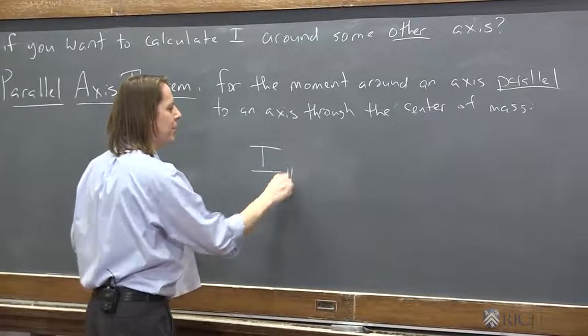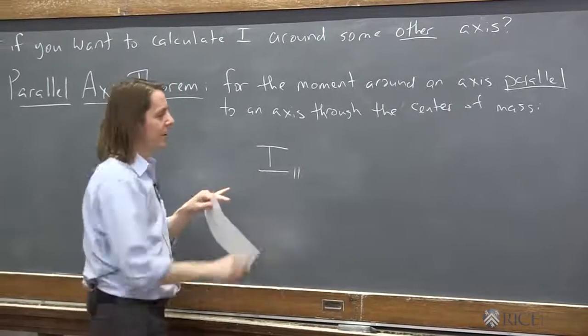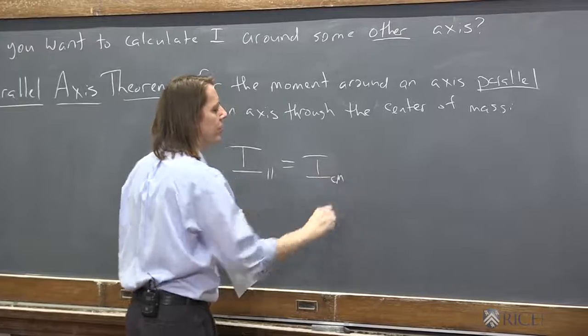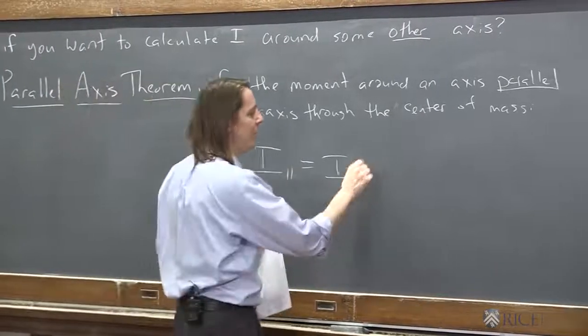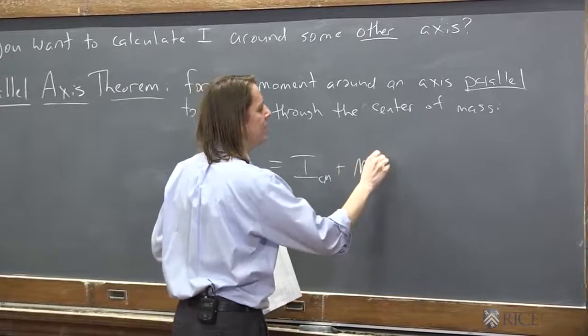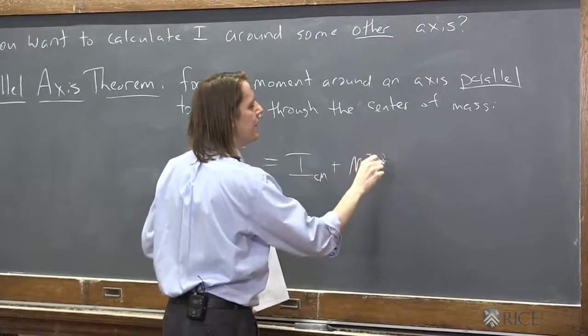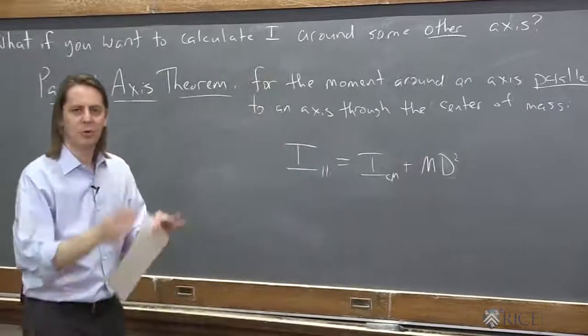The moment through the parallel axis that you want is equal to the moment through the center of mass, the ones that we've been calculating, the ones in tables, plus you just have to add to it, md squared, where d is the separation between the two axes.